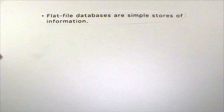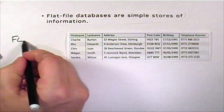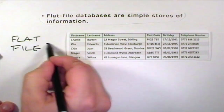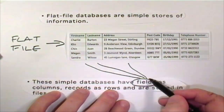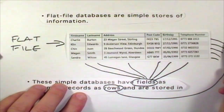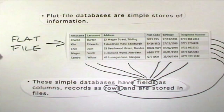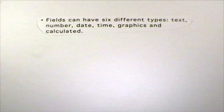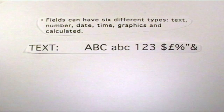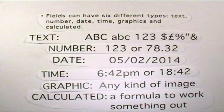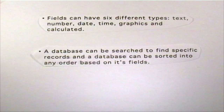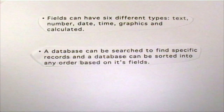So some things to remember. Flat file databases are simple stores of information. These simple databases have fields as columns, records as rows and are stored in files. Fields can have six different types: text, number, date, time, graphics and calculated. A database can be searched to find specific records and a database can be sorted into any order based on its fields.